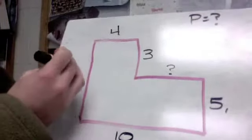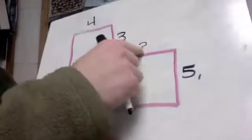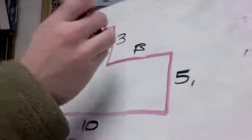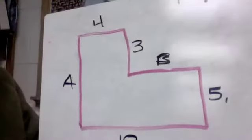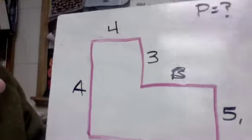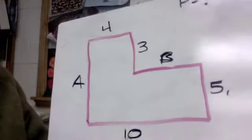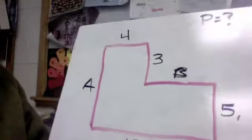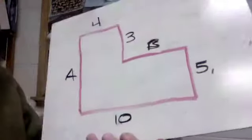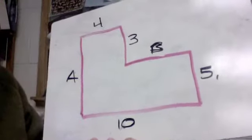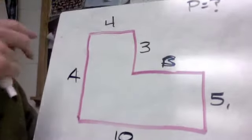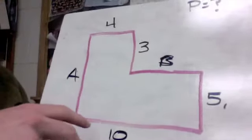I'm going to change these to A and B so we know they're different. There's a really easy way to do this. Now, this drawing is not drawn to scale, so you can't just guess. We can't play a guessing game — we have to figure out what they are by looking at the other numbers around it.